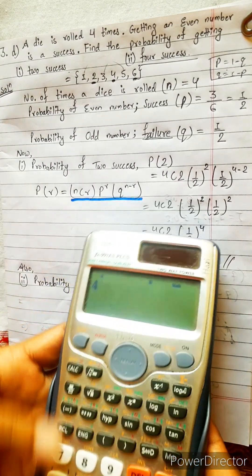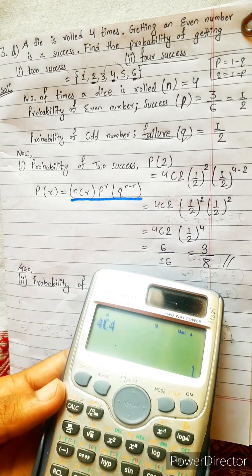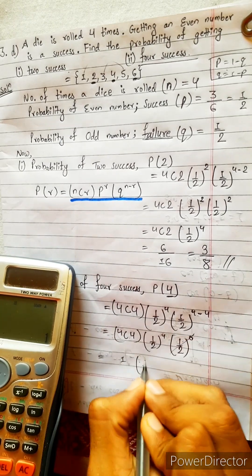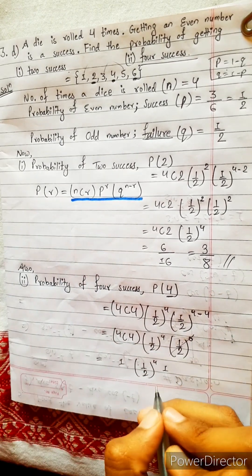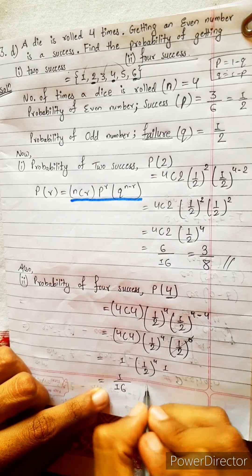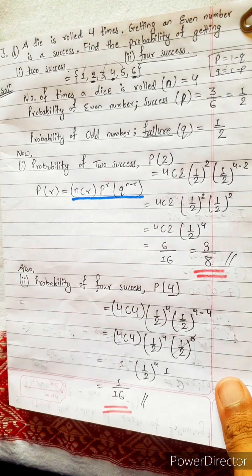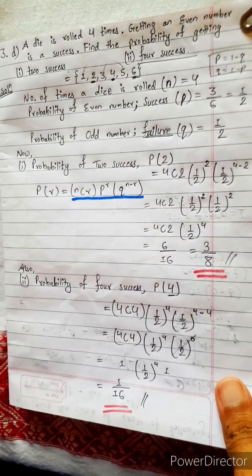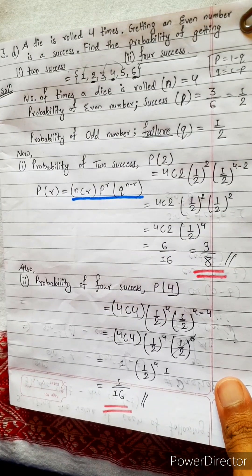4C4 also I think one. 4C4, yes, one. This is one. One by two power four, this is also one. Directly write one by sixteen. Let's check the answer. I'm going to answer something wrong. Bye bye.